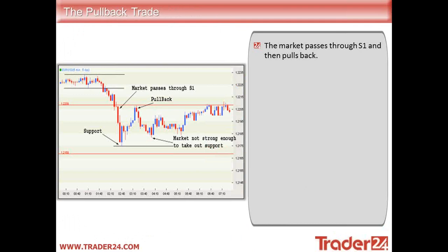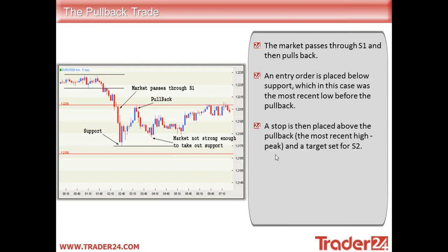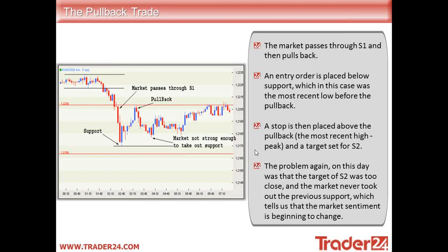The next technique is the pullback trade. The market passes through S1 and then pulls back slightly. An entry order is placed below support, which in this case was the most recent low before the pullback. The market was not strong enough to take out the support level. We're looking to short; a stop is placed above the most recent high peak and a target is set for S2. Unfortunately the market wasn't strong enough to take out that support either, and the target of S2 was too close. The market never taking out the previous support tells us that market sentiment is beginning to change and we could see a potential shift back up to our pivot levels.